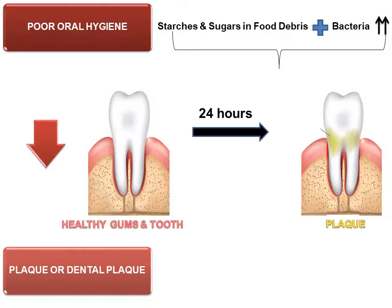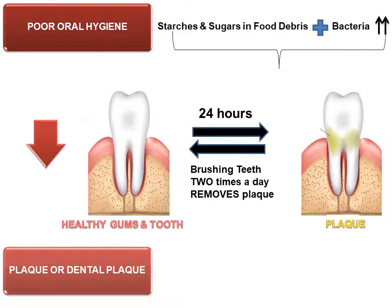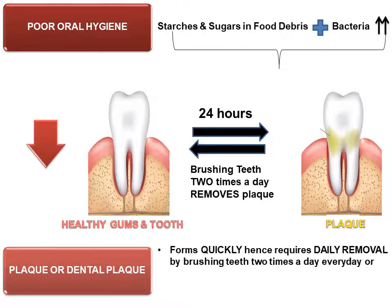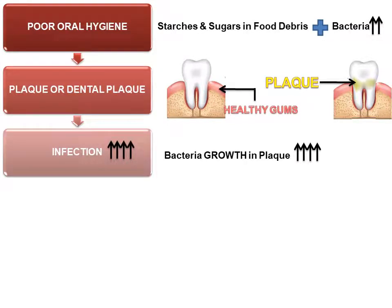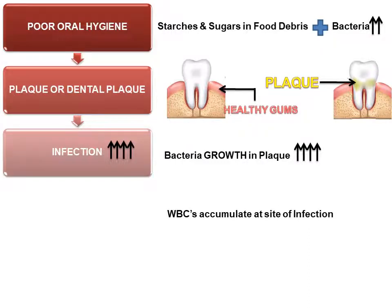Plaque develops in about 24 hours. Brushing teeth two times a day removes plaque. Since plaque forms quickly, it requires daily removal through good oral hygiene. If plaque is not removed by brushing, bacterial growth in the plaque causes infection, and our body will try to protect us through WBCs — white blood cells — which accumulate at the site of infection in a process called inflammation.